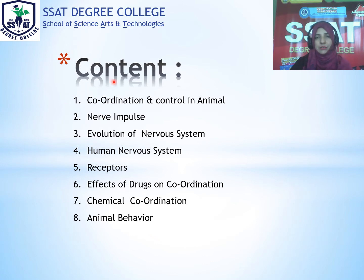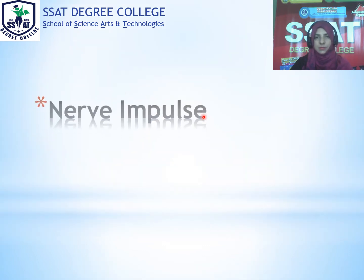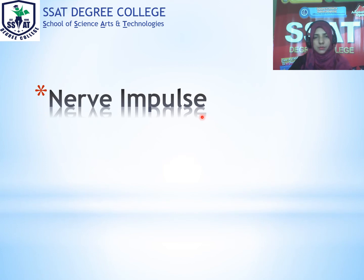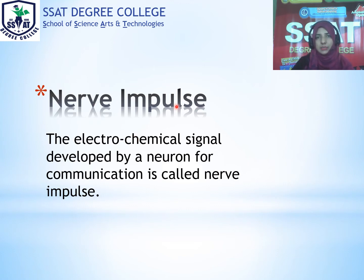As you know, we have done coordination and control in our physical classes. So today we are going to start our new topic, that is nerve impulse. What is nerve impulse? The electrochemical signal developed by a neuron for communication is called nerve impulse.